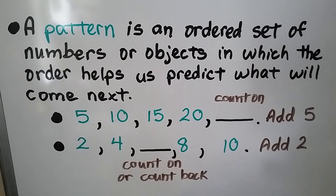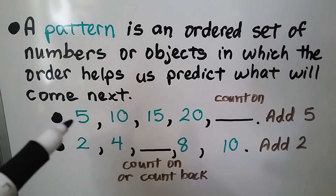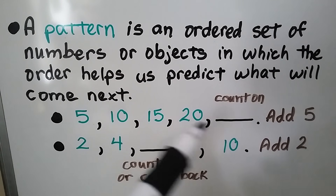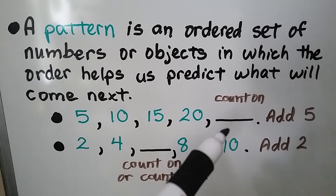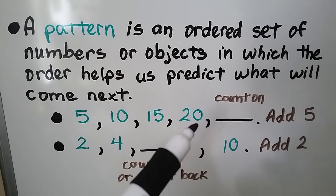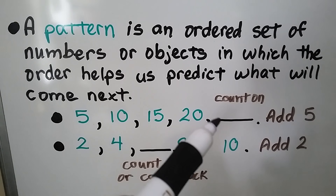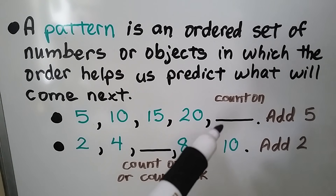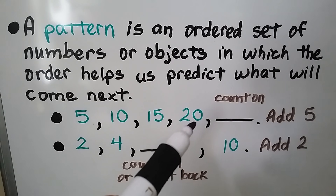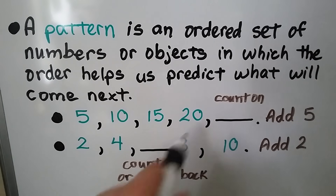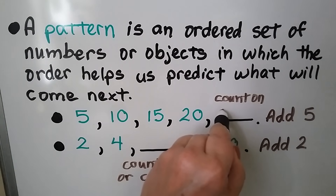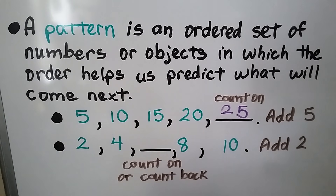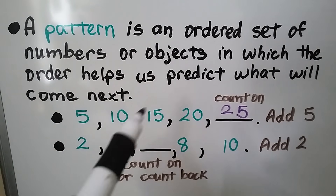For this first one, it goes 5, 10, 15, 20. We're adding 5 to the previous number, so we're skip counting by fives. The next one — 5 more than 20 would be 25. The pattern is to add 5.